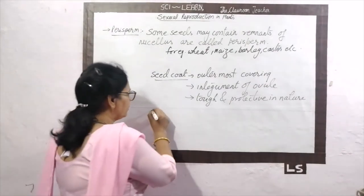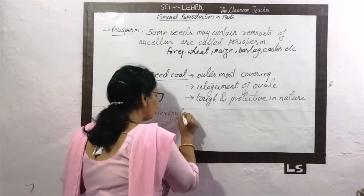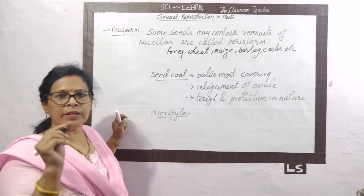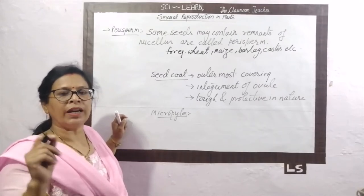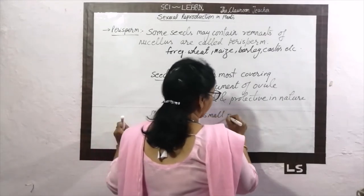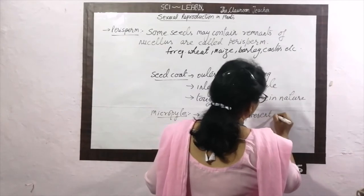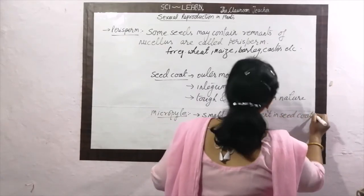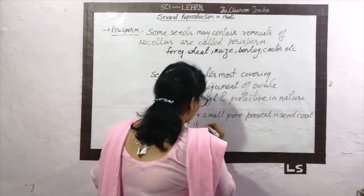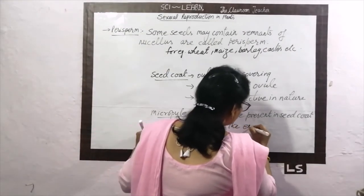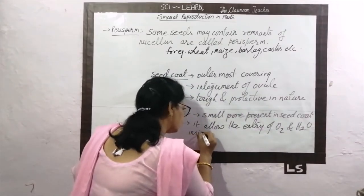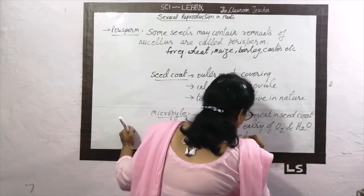The seed coat also contains micropyles — one small opening present in the seed, that is the micropylar end of the embryo. What is the role of this micropyle? It is a small pore in the seed which allows the entry of oxygen and water during germination.